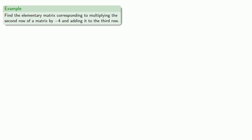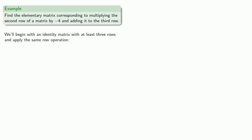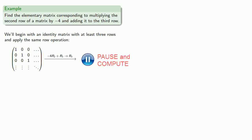For example, suppose we want to find the elementary matrix corresponding to multiplying the second row of a matrix by negative 4 and adding it to the third row. We'll begin with an identity matrix with at least three rows and apply the same row operation to get our elementary matrix.